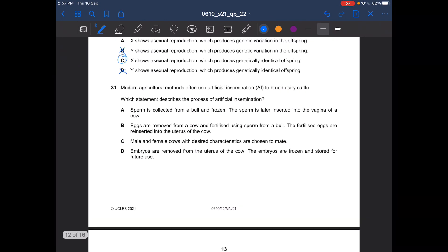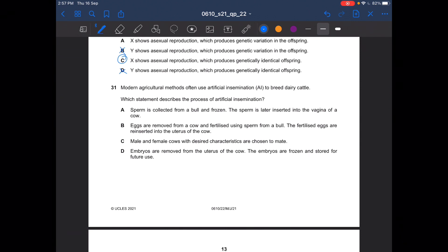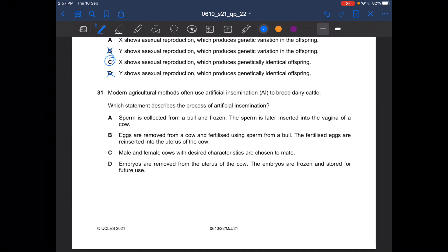Next question. Modern agricultural methods often use artificial insemination to breed dairy cattle. Which statement describes the process of artificial insemination? So the answer should be A. Sperm is collected from a bull and frozen. The sperm is later inserted into the vagina of a cow. C is selective breeding. So it can't be B, it can't be C, it can't be D.